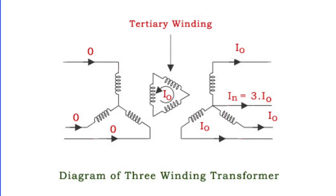The primary function of the tertiary winding is to reduce unbalance in the primary due to unbalance in three-phase load, redistribute the flow of fault current, and supply an auxiliary load at a different voltage level in addition to its main secondary load. This winding is connected in delta formation in a three-winding transformer, which aids in limiting the fault current in the event of a short circuit from line to neutral.